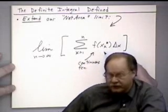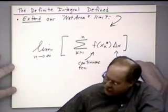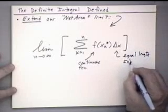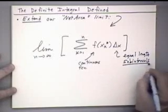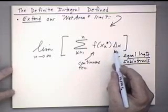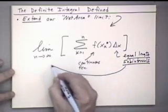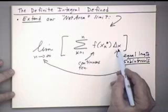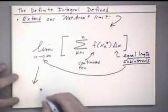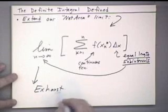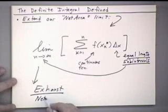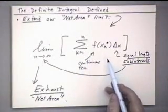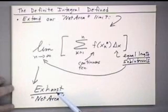That's a limitation on the kind of function it can be. Also, these were equal-length subintervals — all the same length — which is the reason we can take the limit and just let the number of rectangles go to infinity, because that forces each one to shrink. As a result, we exhaust the net area. This is basically the same argument Archimedes used in exhausting the area to find the area of individual figures.